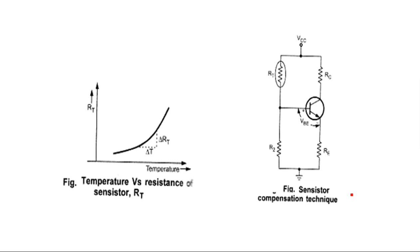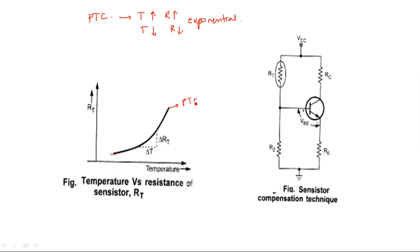The characteristics of Sensiters include a positive temperature coefficient: as temperature increases, resistance increases; as temperature decreases, resistance decreases — giving an exponential relation between the two. This is the positive temperature coefficient curve. In contrast, the negative temperature coefficient curve (as in thermistors) shows resistance decreasing as temperature increases.